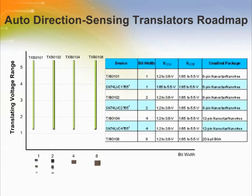TI has four devices in its Auto Direction Sensing Translator portfolio. The X-axis shows the bit width while the Y-axis shows the translating voltage range. For example, the TXB0104 is a four-channel device that can translate anywhere from 1.2 volts to 5.5 volts.